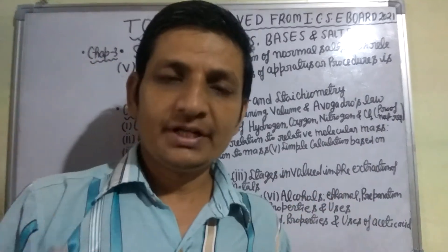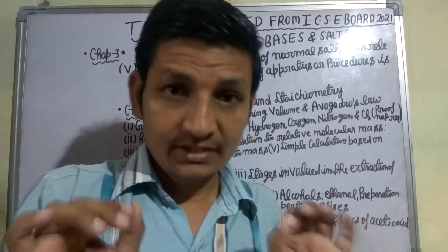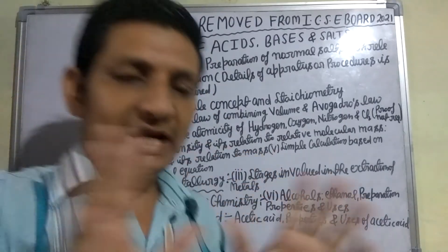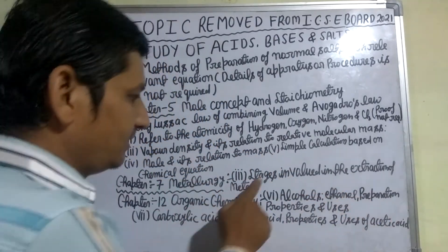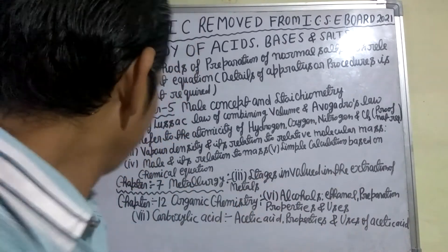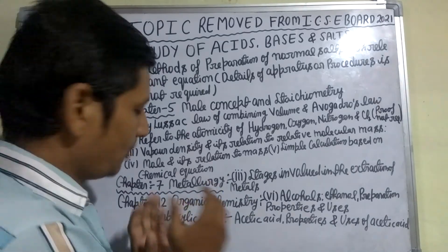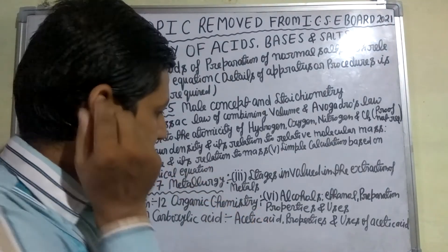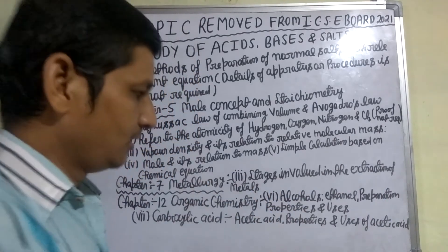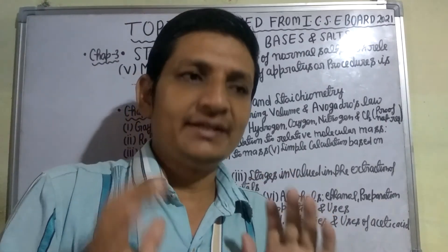After this, the next chapter removed from your syllabus is Chapter 7: Metallurgy. A large part of Chapter 7 — stages involved in the extraction of metals — is removed from your syllabus. Now you will study only about aluminum and its alloys.